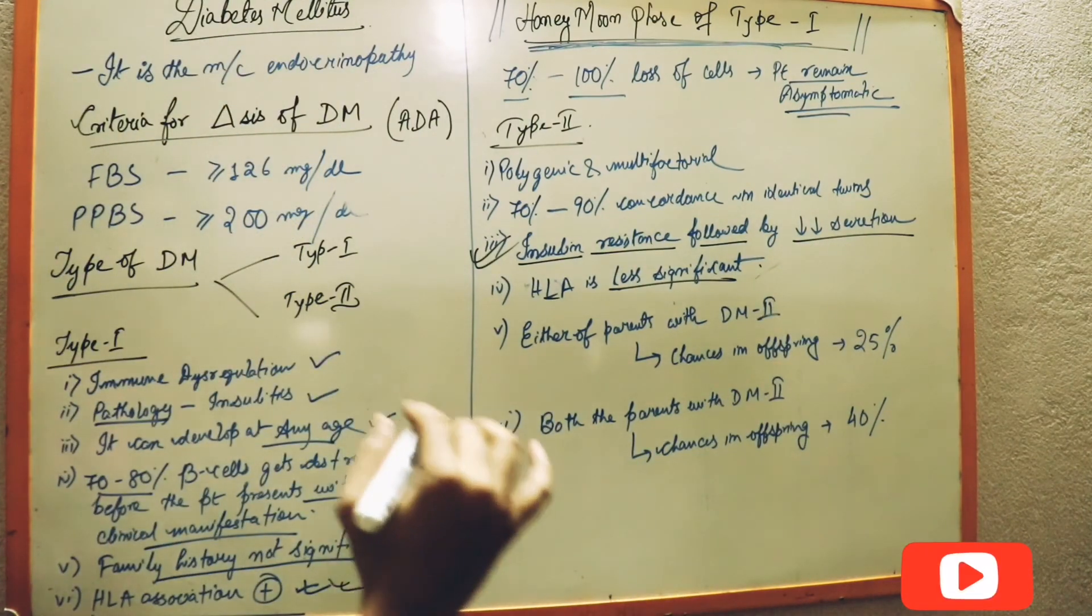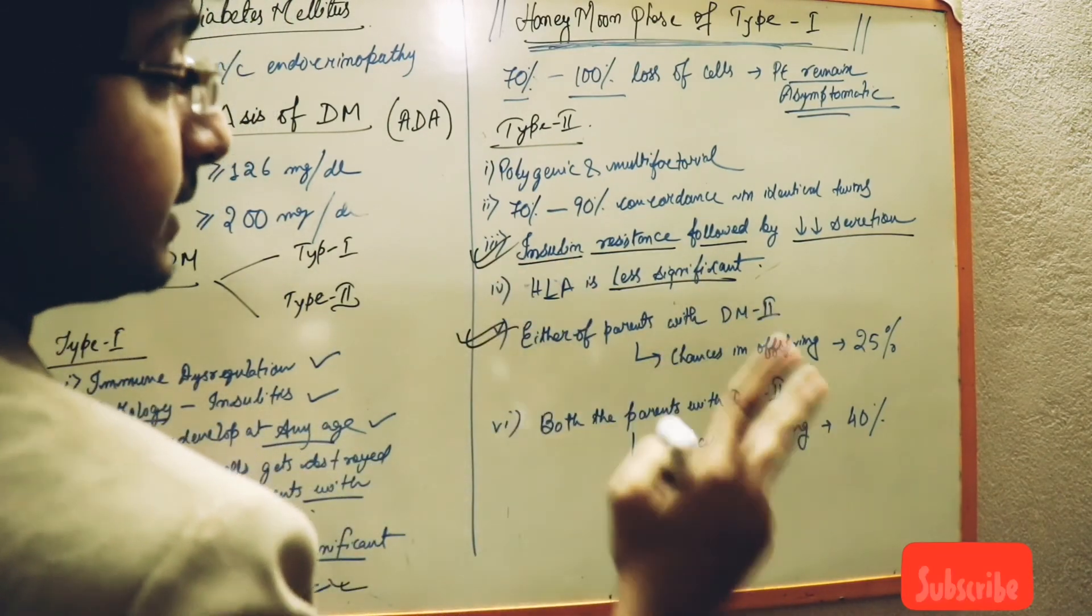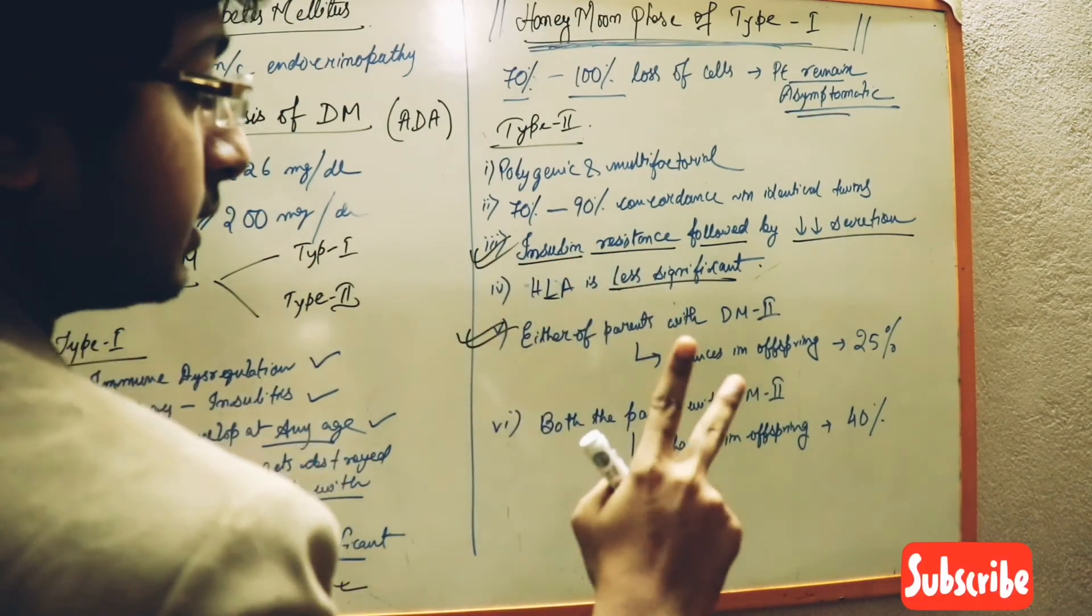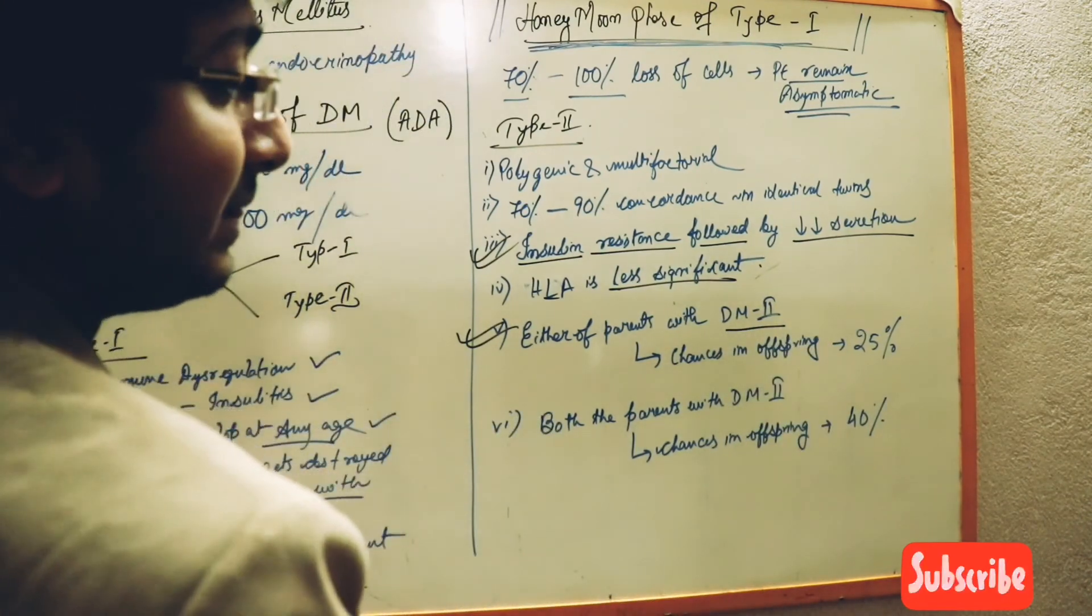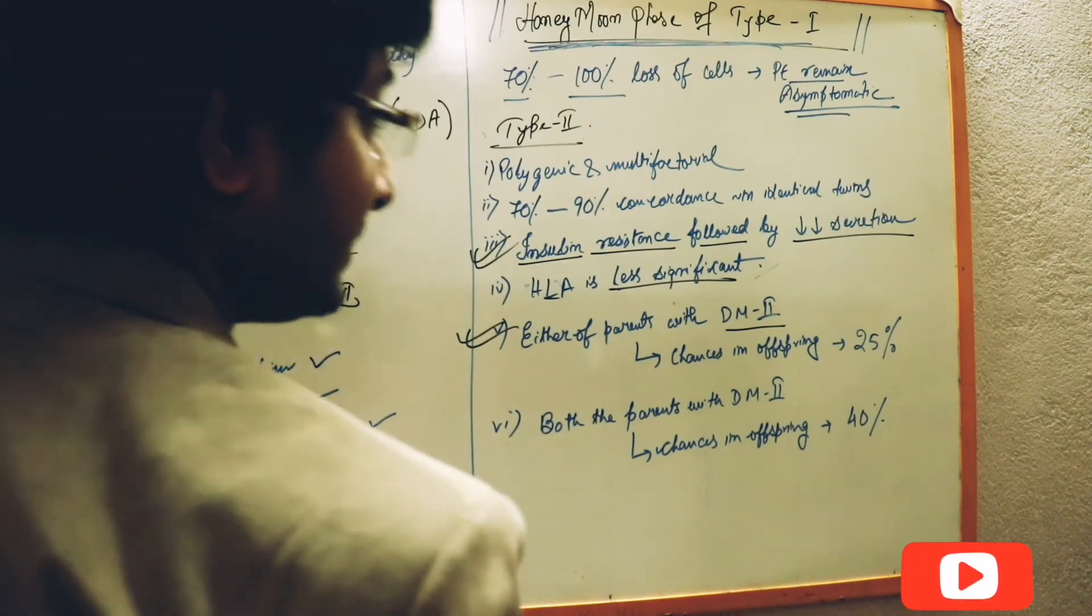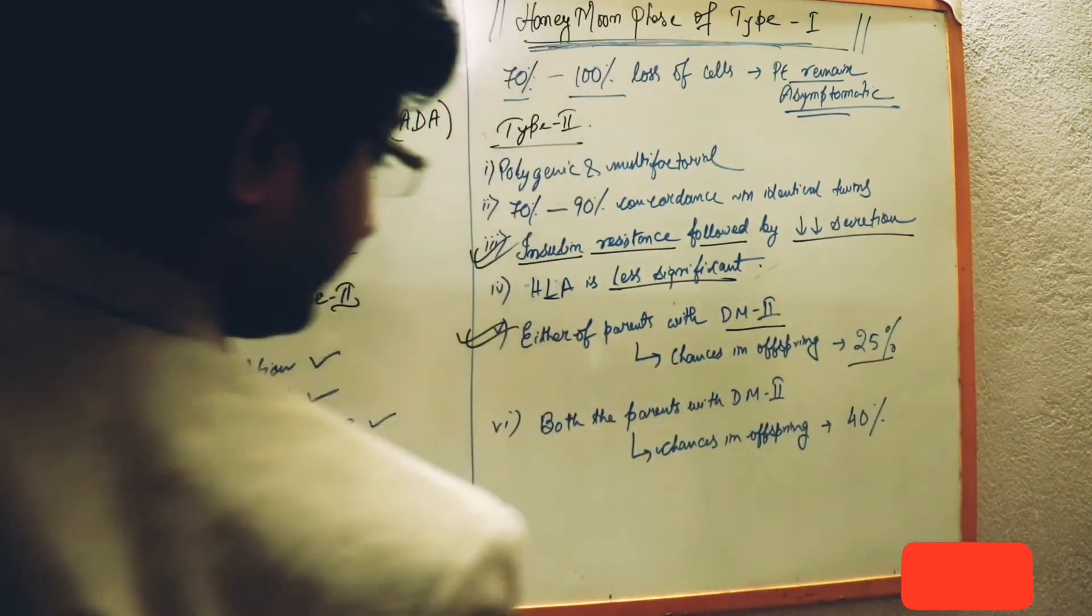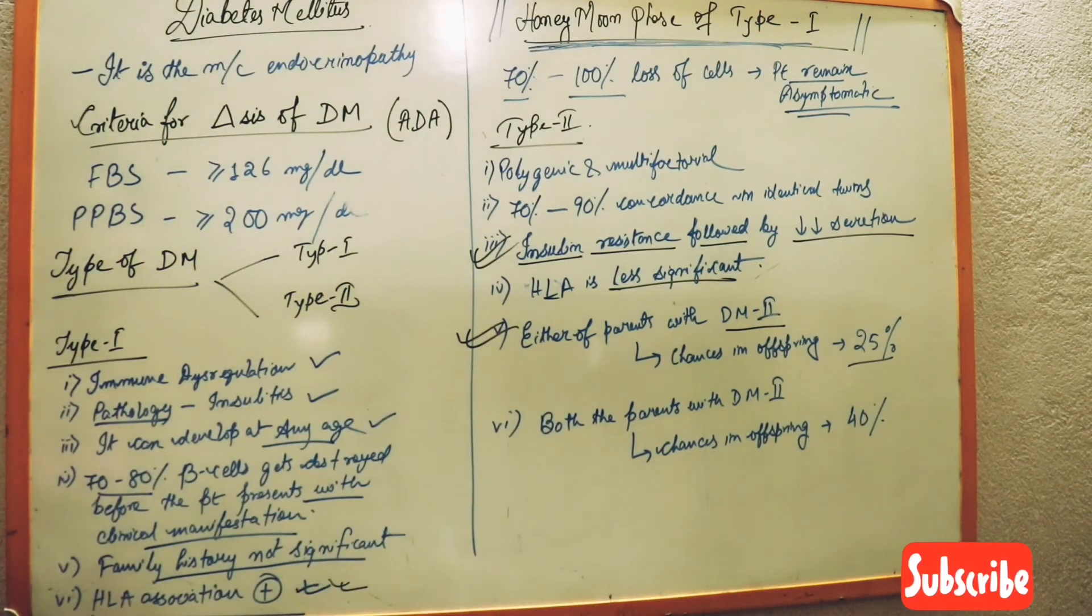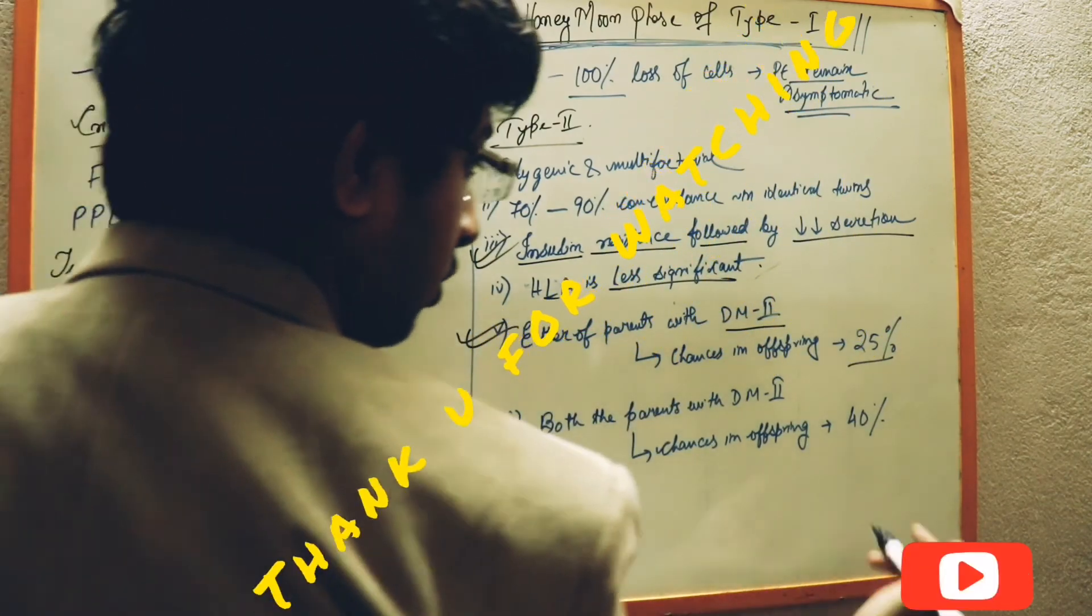Now if either of the parents, mother or father, is having diabetes mellitus type 2, then their offspring will have a chance of getting diabetes mellitus type 2 of 45 percent. And if both parents have diabetes mellitus type 2, offspring will have a chance of getting diabetes mellitus type 2 of 40 percent.